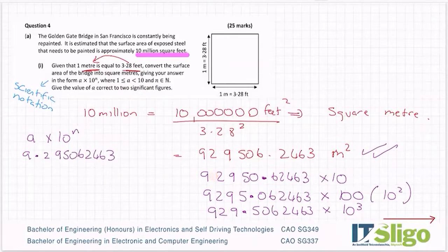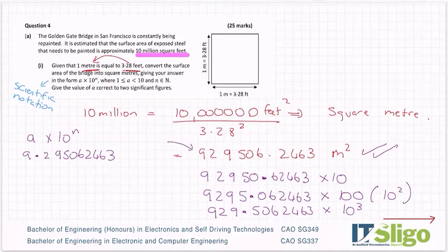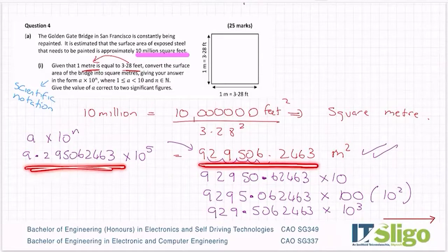So 9.295062463. So the decimal point has gone in here. And how many places did I move it? So I'm going to work from this one. So I moved it 1, 2, 3, 4, 5. So it's that multiplied by 10 to the 5. So they are the same numbers. This one here is the scientific notation of this answer here.